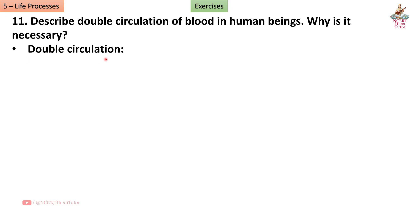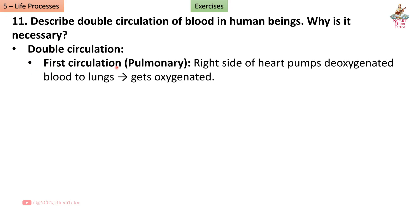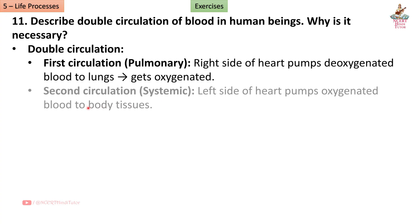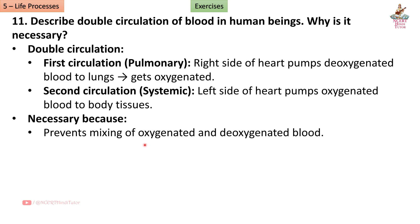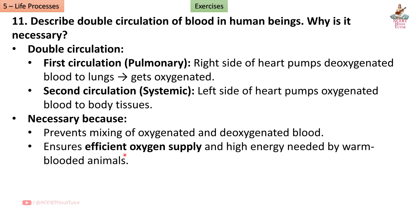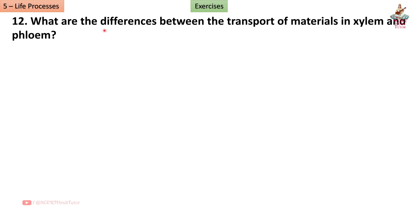Question 11: Describe double circulation of blood in human beings. Why is it necessary? Answer: First circulation — Pulmonary: the right side of the heart pumps deoxygenated blood to the lungs, where it gets oxygenated. Second circulation — Systemic: the left side of the heart pumps oxygenated blood to body tissues.